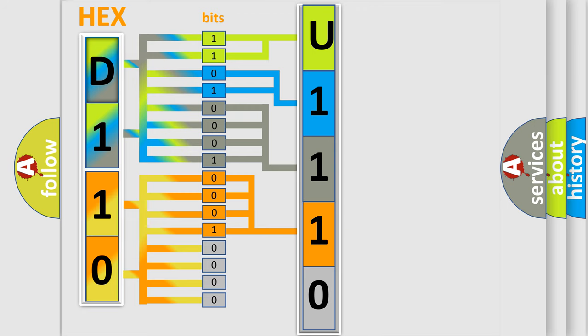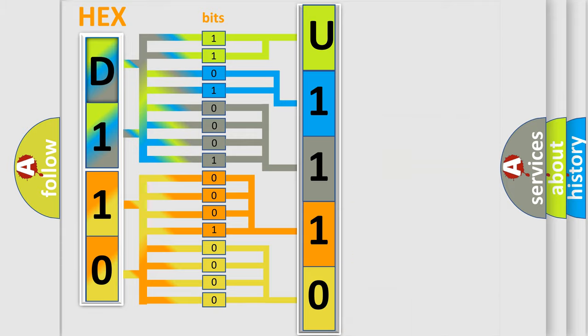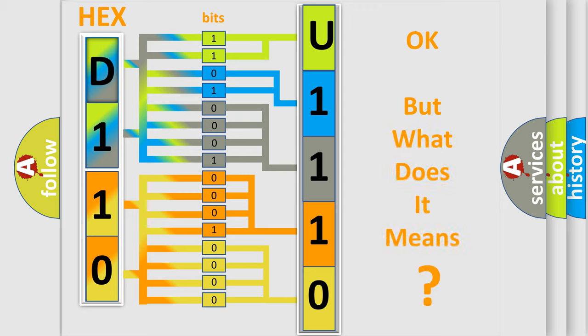A single byte conceals 256 possible combinations. We now know in what way the diagnostic tool translates the received information into a more comprehensible format. The number itself does not make sense to us if we cannot assign information about what it actually expresses.